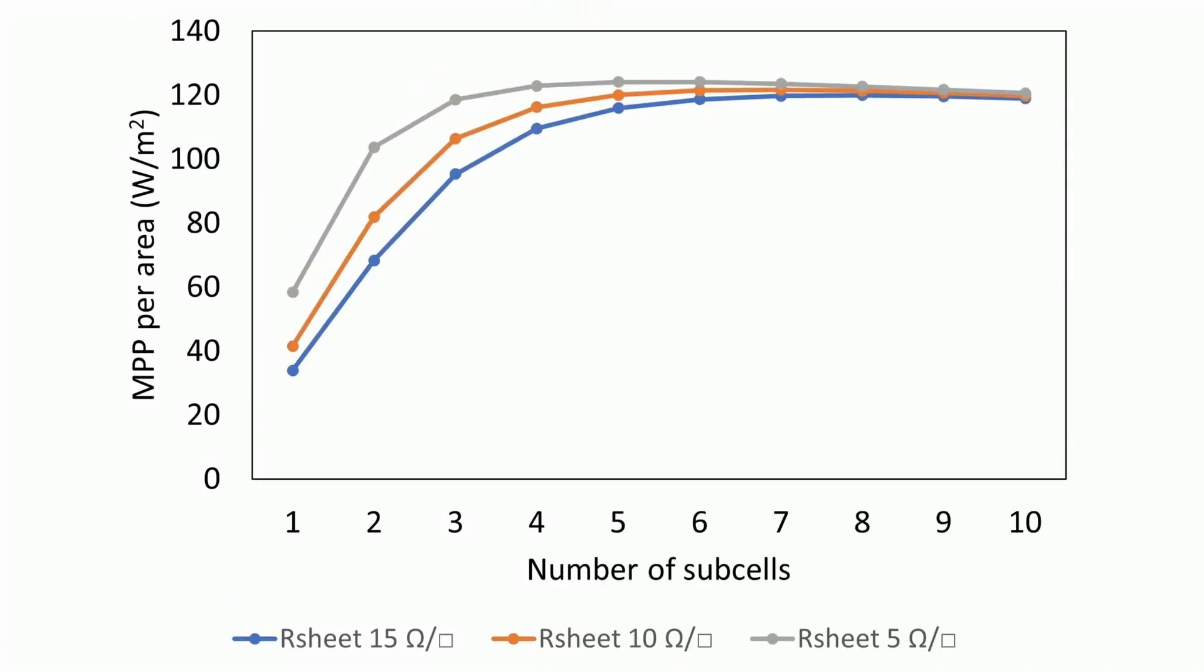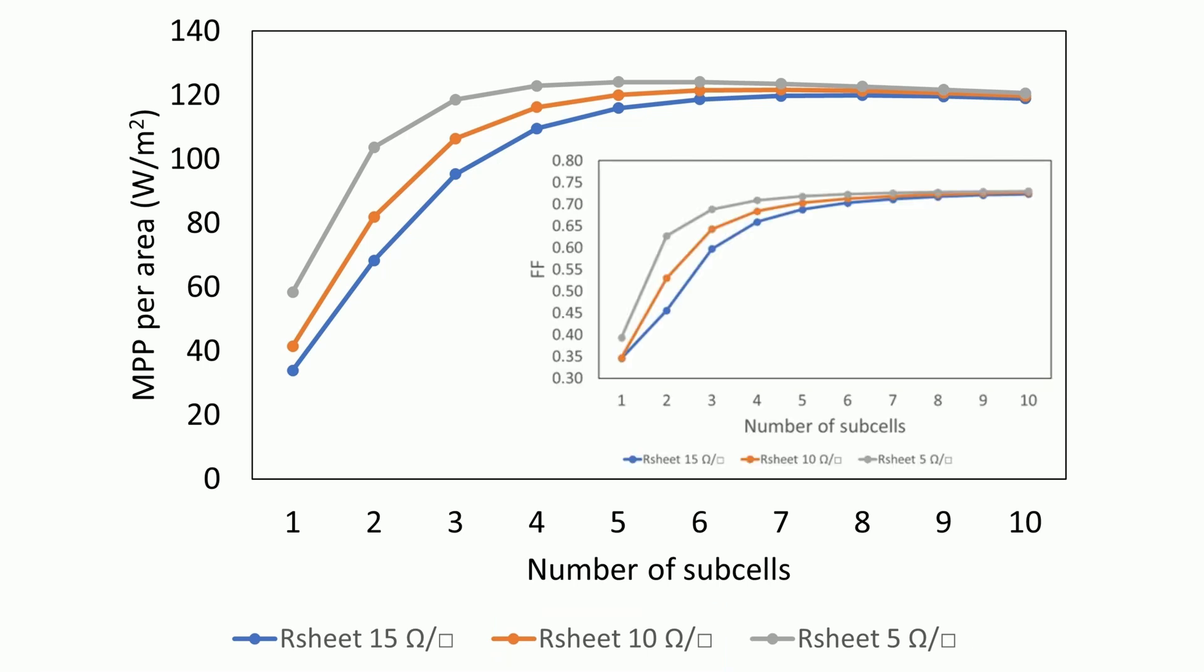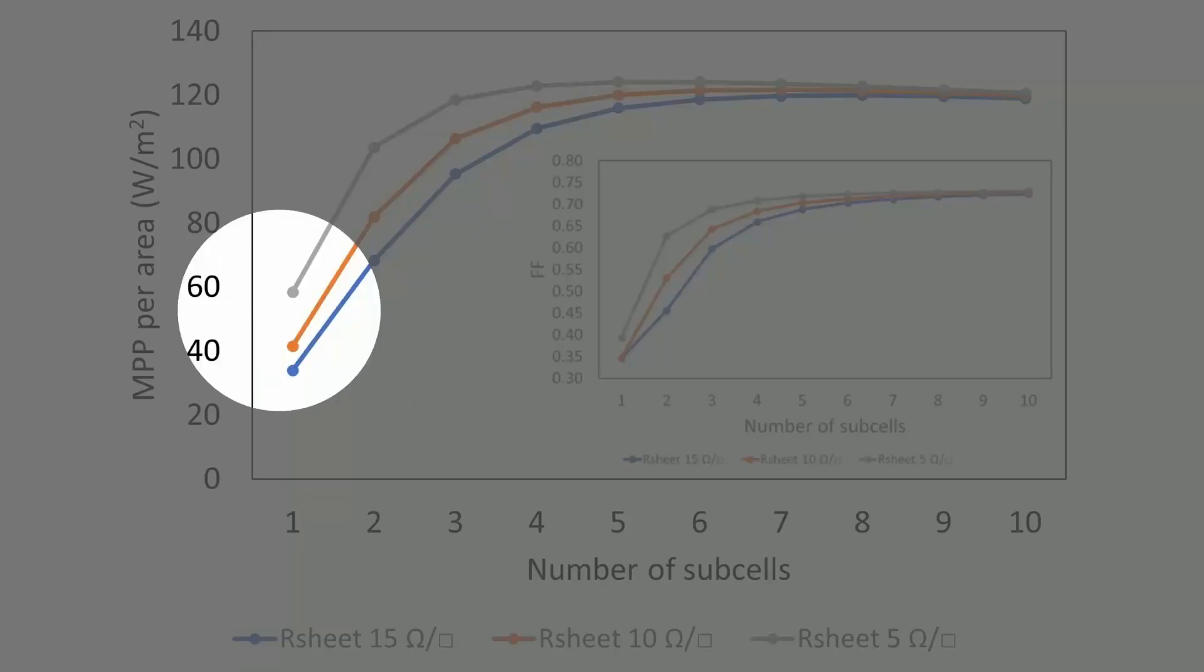Here we show the maximum power output with an increasing number of sub-cells, and sheet resistance of 15, 10, and 5 ohm per square. A lower sheet resistance reduces the total series resistance of the cell, improves the squareness of the JV curve, hence the power at MPP and the FF increase.